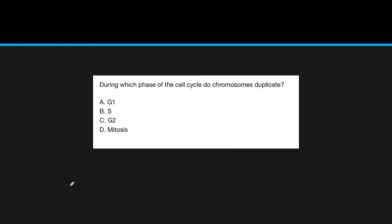Here's a practice question: during which phase of the cell cycle do chromosomes duplicate? We talked about how DNA duplicates in the DNA synthesis phase, which is S. G1 is when the cell is growing and preparing for division. G2 is when the cell is getting ready for division. And mitosis is the process of dividing. So the answer is B — S phase.